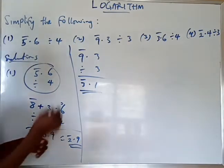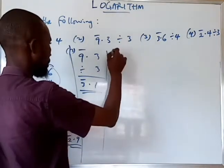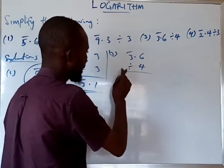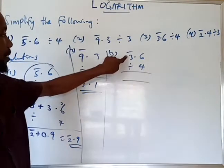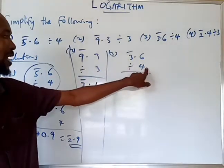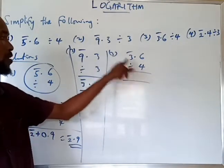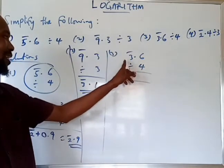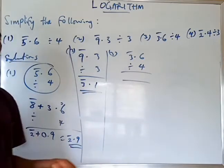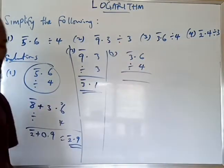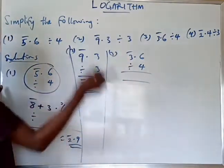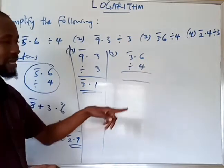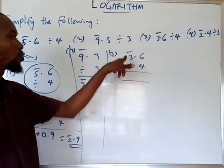Now for question 3, we have bar 3.6 divided by 4. In any situation of division, the first thing we have to look at is the number carrying the bar and the denominator — the two must produce a division with no remainder. When we observe this, we realize that 3 divided by 4 is not possible, so the question also has to be adjusted. We rewrite 3 as the next number that can be divided by 4 without leaving a remainder.